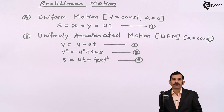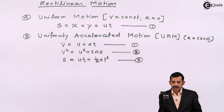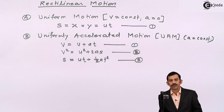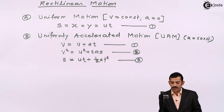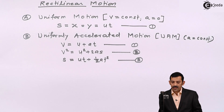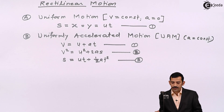When acceleration remains constant, the motion is uniformly accelerated motion. These three equations — one, two, three — are valid for uniformly accelerated motion.